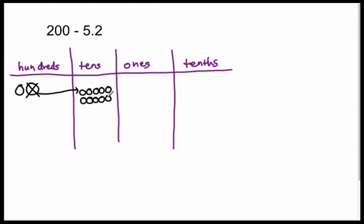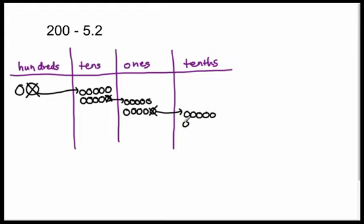So now I need to unbundle a ten. If I unbundle a ten, that one ten is now worth ten ones. I just took it apart — there are the ten ones. And now I need some tenths, so I'm going to unbundle a one and get ten tenths. There are my ten tenths. Now, could I subtract two tenths from that? Yes, I can. And as you can see, our number is still two hundred, but it has a different name. It's now one hundred plus nine tens plus nine ones plus ten tenths, and that all makes two hundred.